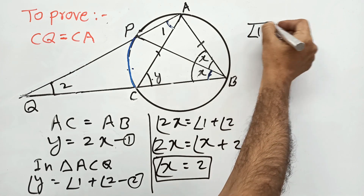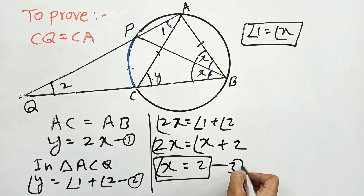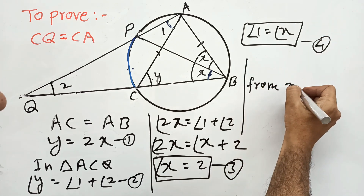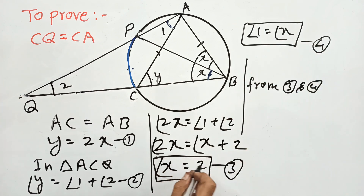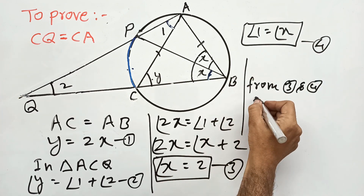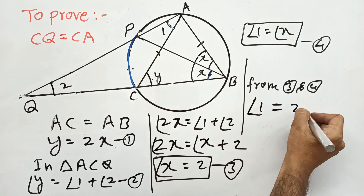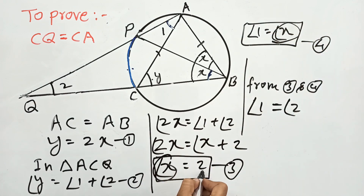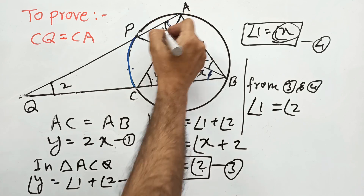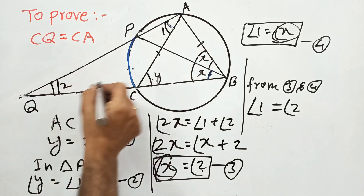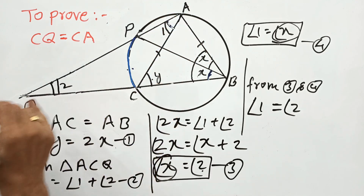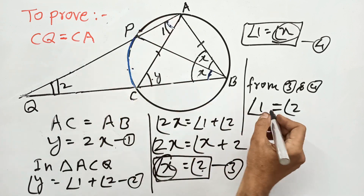Concluding from these two results: angle 1 equals X, and X equals angle 2. Therefore angle 1 equals angle 2, since X is common to both. This means triangle ACQ is an isosceles triangle, with angle 1 equal to angle 2. Therefore CQ equals CA, and the proof is complete.